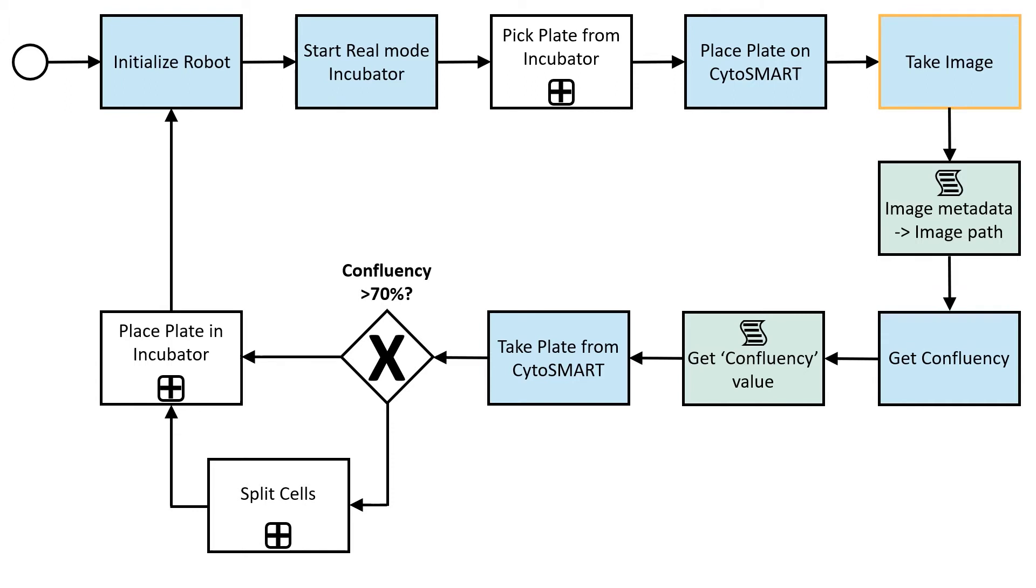A Cytosmart Lux 3FL calculates cell confluency and instantly communicates to the system whether or not to passage the cells. The Lux 3FL and all other devices in this system communicate with the control software via the OpenCela 2 standard. This works both over Ethernet and Wi-Fi.